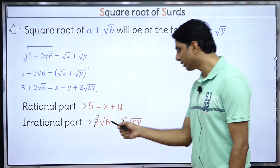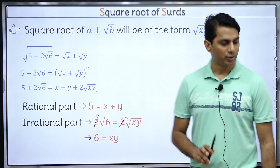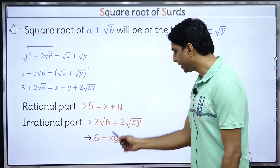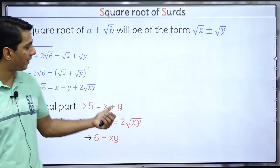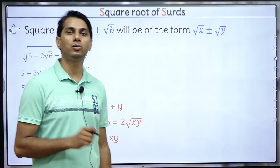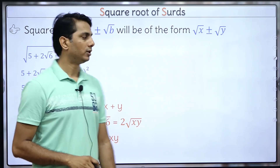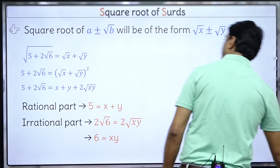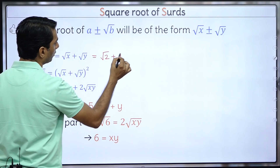Simplifying: the 2s cancel out, so √(xy) = √6. Squaring both sides, x × y = 6. So I have two relations: x + y = 5 and x × y = 6. Now think of two numbers whose sum is 5 and product is 6. That's very easy — the two numbers are 2 and 3: 2 + 3 = 5 and 2 × 3 = 6.